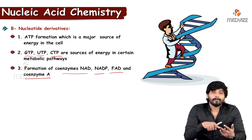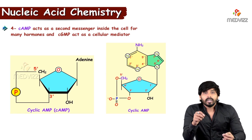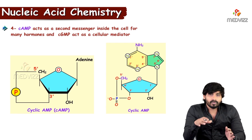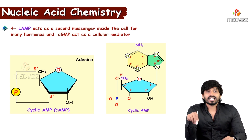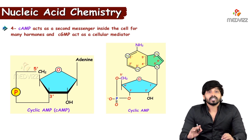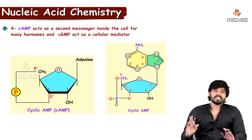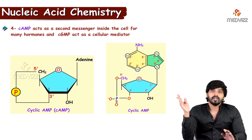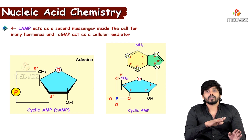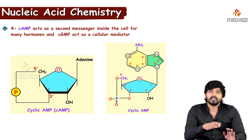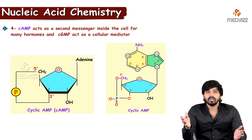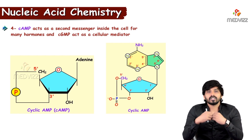An important modified nucleotide is cAMP — cyclic adenosine monophosphate — which is an important second messenger inside the cell. The hormone itself is the first messenger: hormones are produced at one site and carry out their function at another site. The message is carried from one site to the other, so the hormone is considered the first messenger.